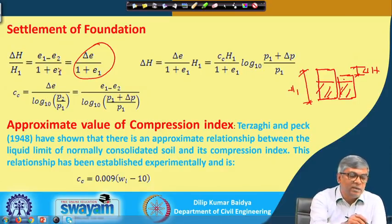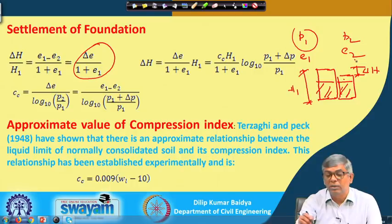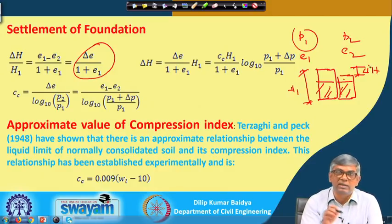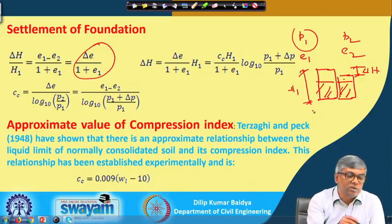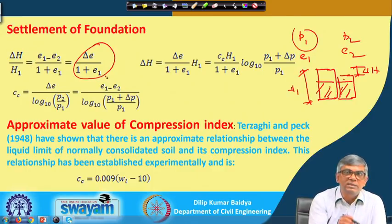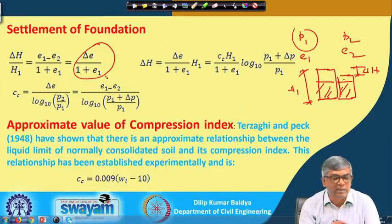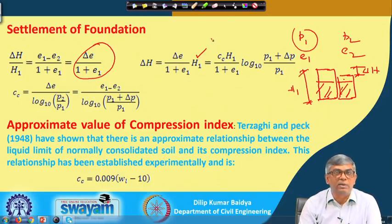E1 minus E2 is delta E. If initial pressure was P1 and final pressure is P2, under P1 the void ratio was E1 and under P2 it is E2. So delta E by (1 plus E1) equals change in volume divided by original volume, which equals change in thickness divided by original thickness. Therefore, delta H equals (delta E / (1 + E1)) multiplied by H1.